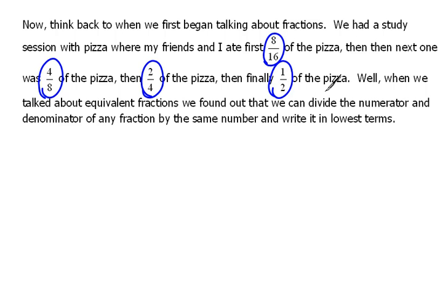Well, let's remember how we did that. If we had 8 over 16, there was a way to write this in lowest terms so that we could see it was actually one half of the pizza.